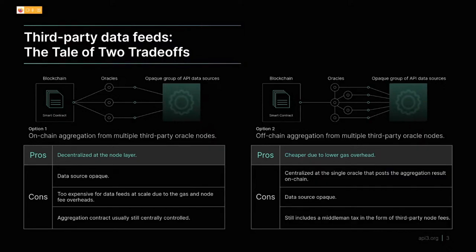The other architecture used today is off-chain aggregation from multiple third-party nodes. This saves a lot of gas at the aggregation level, but you're trading off centralization — it centralizes the oracle that posts data on-chain. It actually magnifies the problem of not knowing where the data sources are, making it even harder to detect what values nodes are posting, and you still have to pay node operators to call the APIs and relay data to the blockchain.